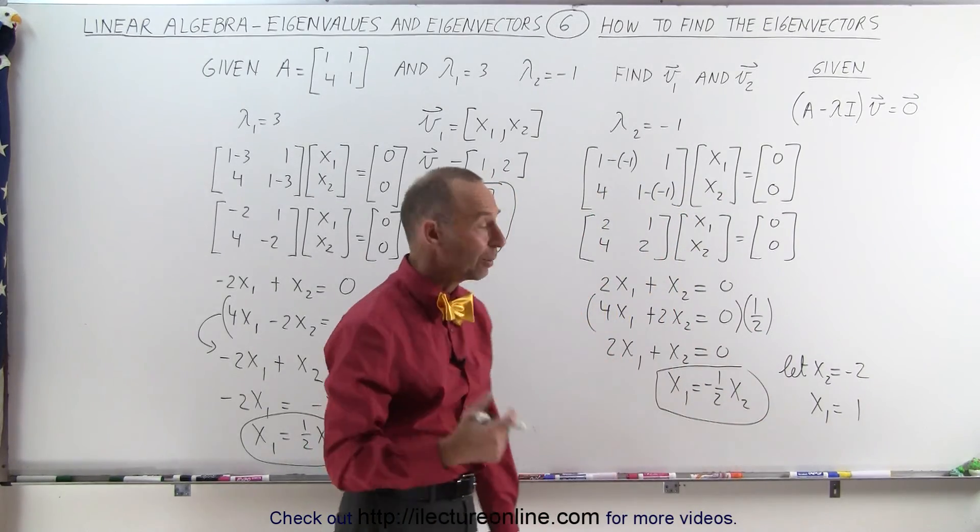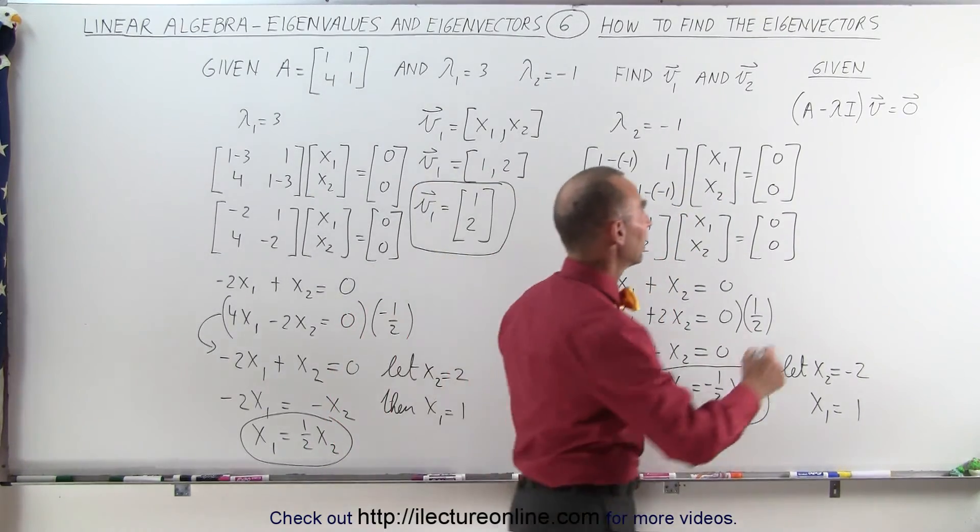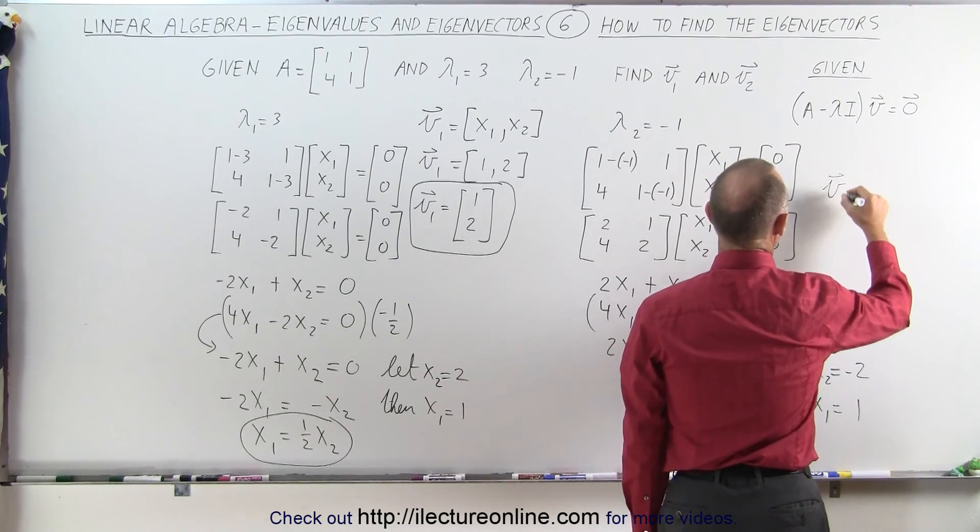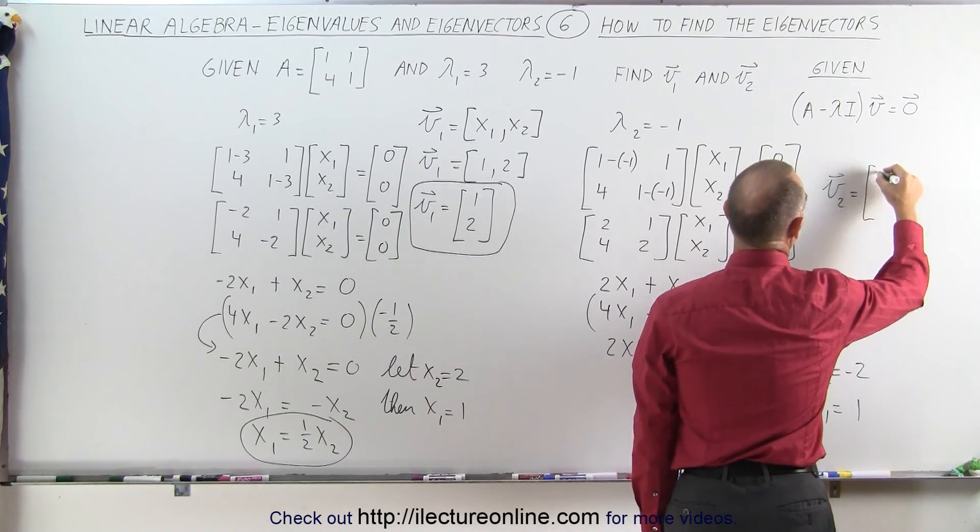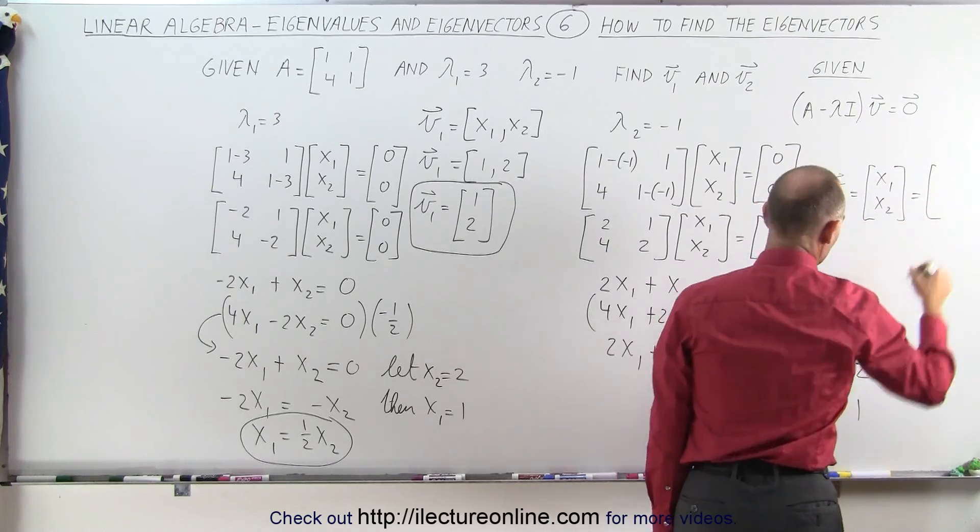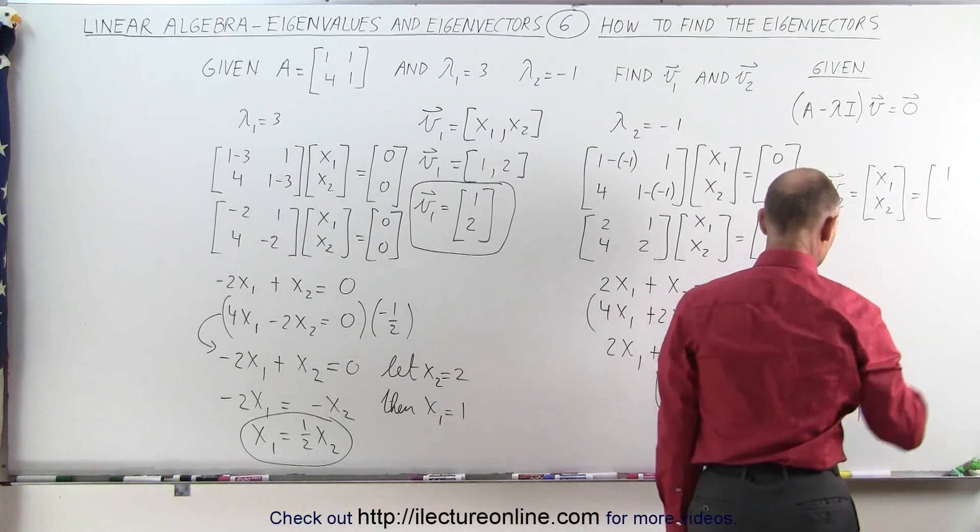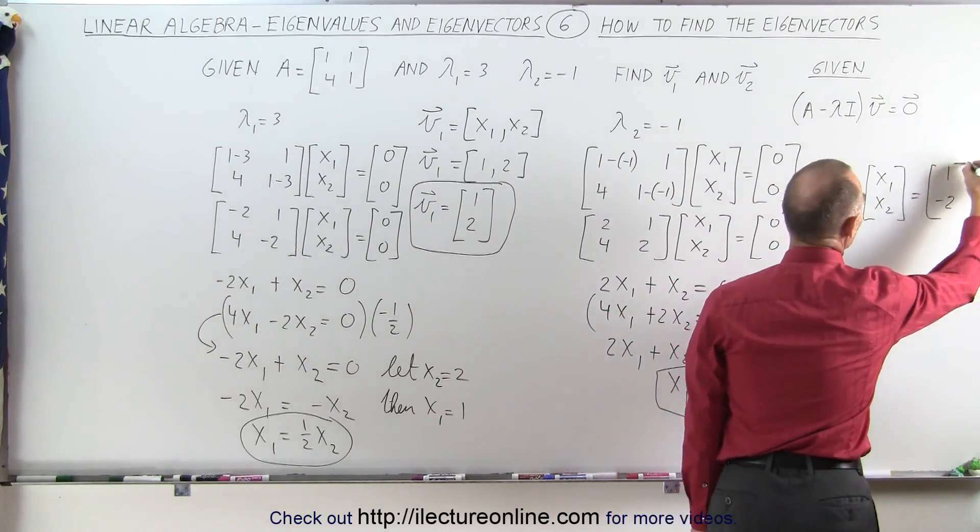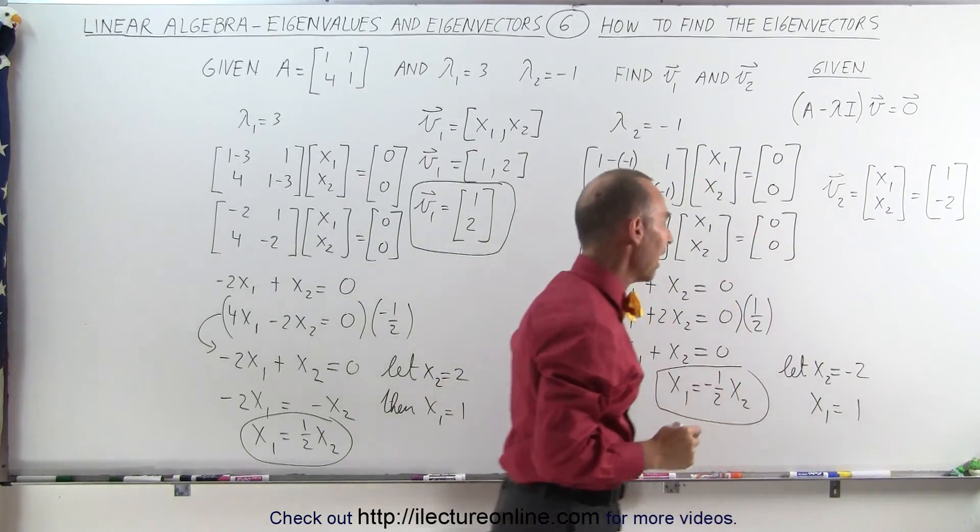Those would then be the two elements of my second eigenvector. I can now write my second eigenvector simply as x1, x2, like this, is equal to x1 would be 1, and x2 would be a minus 2. And there's my second eigenvector.